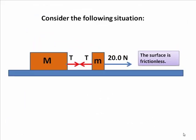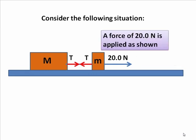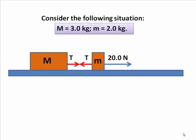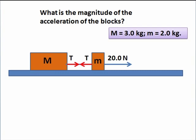All right, let's try a question now. We have a frictionless surface. We have a force of 20 newtons applied as shown. And here's what the two masses are: big M is 3 kilograms and little m is 2 kilograms. So first, let's find the acceleration of the blocks.